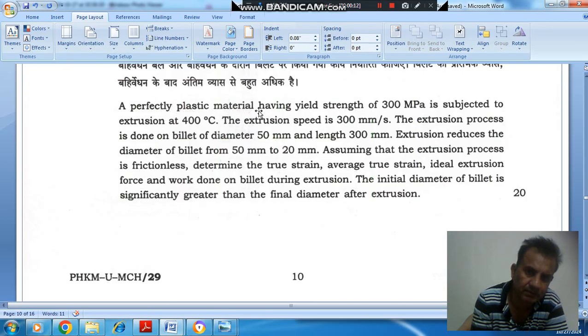A perfectly plastic material having yield strength of 300 MPa is subjected to extrusion at 400°C. The extrusion speed is 300 mm per second. The extrusion process is done on billet of diameter 50 mm and length 300 mm. Extrusion reduces the diameter of billet from 50 mm to 20 mm.